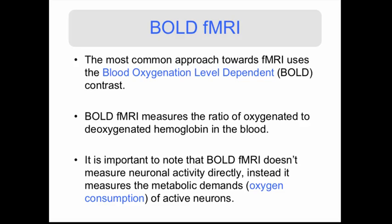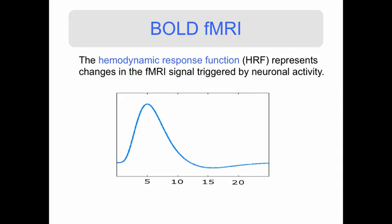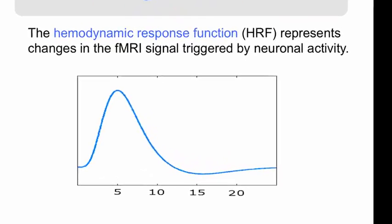When neurons are active, they need to consume oxygen, and this is something we can track using BOLD fMRI. How does the fMRI signal change when you perform a task? The way it changes is described by something called the hemodynamic response function, or the HRF, and this represents changes in the fMRI signal triggered by neuronal activity.